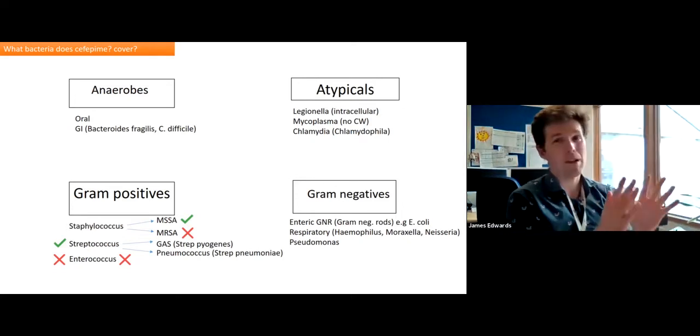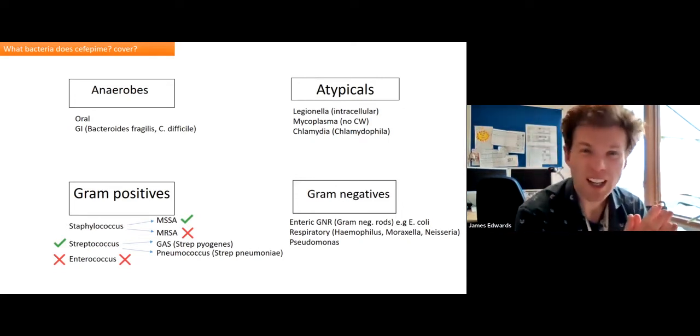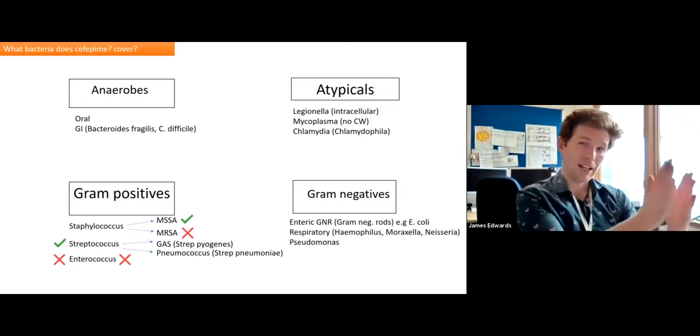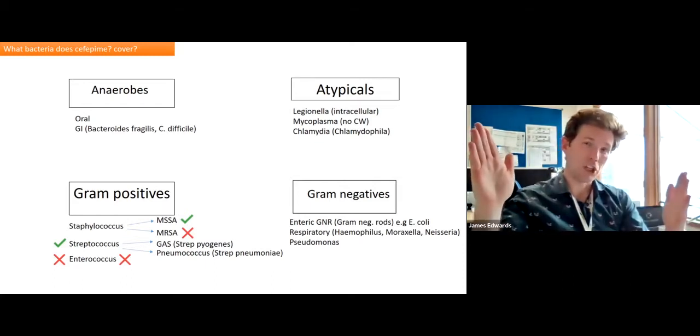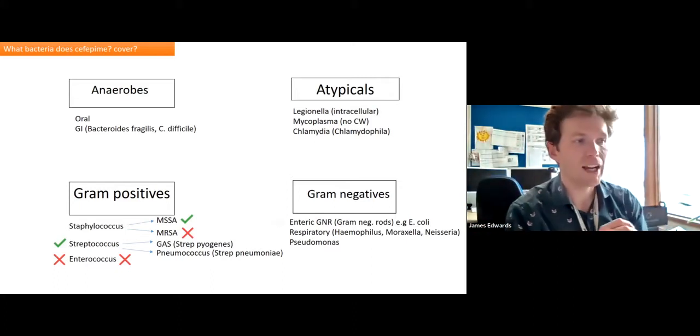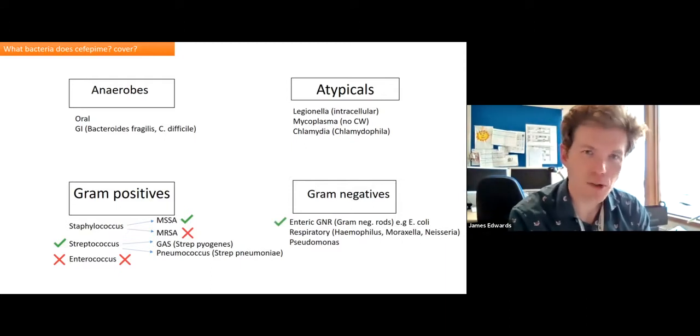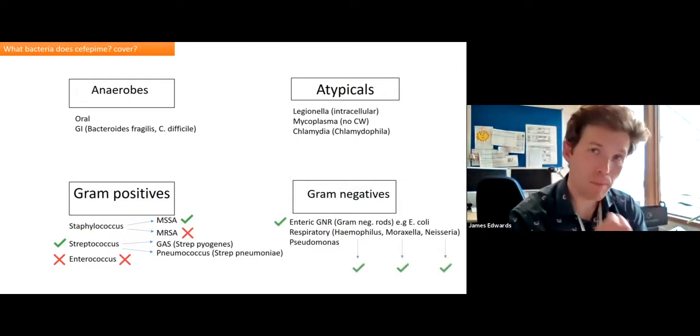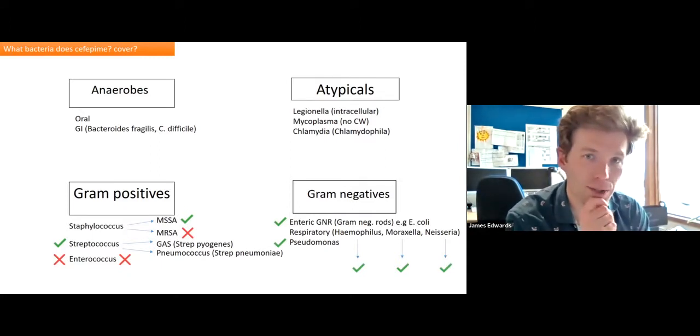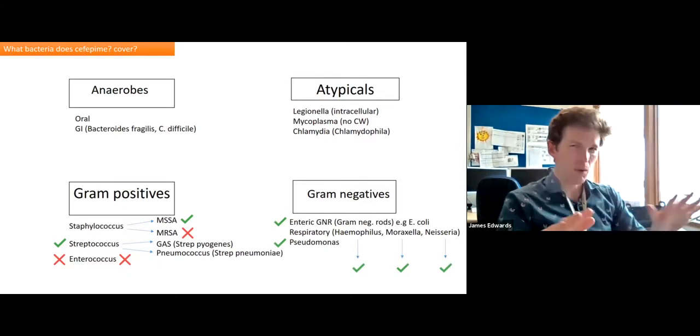Where cefepime comes into its own a little bit is with the gram negatives. Remember, I said that gram negative coverage kind of gets a bit better the further along the generation you go. This is four out of five generations. And so this one is really good. It works well on the gram negative rods. It works well on the respiratory gram negatives, and also still works on pseudomonas.